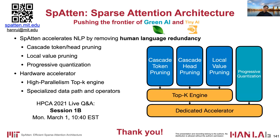As a conclusion, we propose the Spartan accelerator to push the frontier of green AI and tiny AI. Spartan accelerates NLP by removing redundancy in human languages with cascade token and head pruning, local value pruning, and progressive quantization. It is also equipped with a high-parallelism top-k engine and specialized data paths and operators to improve efficiency. For more information, please check our website at spartan.mit.edu. Thank you for listening, and welcome to the live Q&A session on Monday, March 1st at 10:40 Eastern Time.